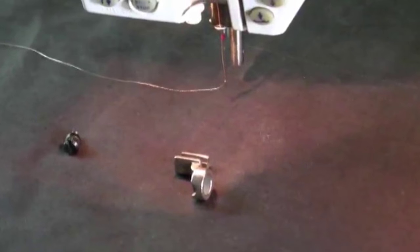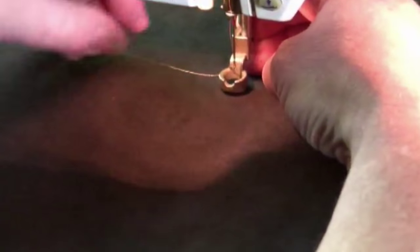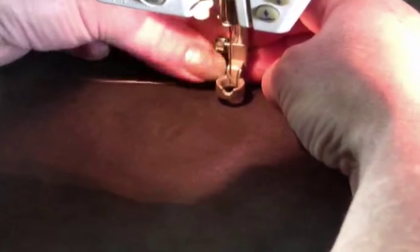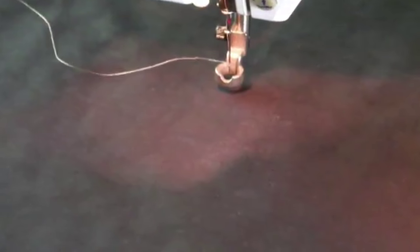To attach the foot, simply remove the foot on your machine. Now we will take our ruler foot and place it over the bar, and then using the screw, attach. My ruler foot is now attached.